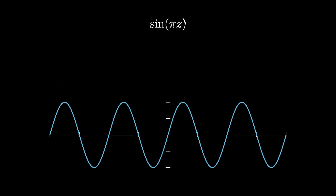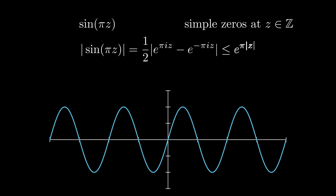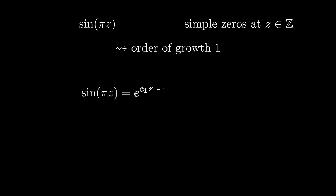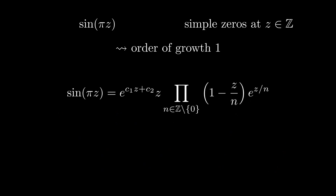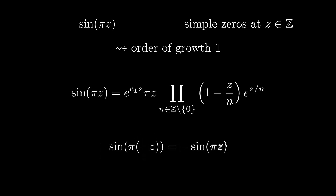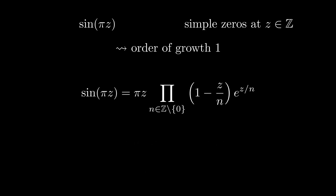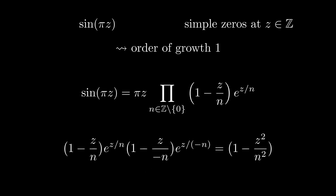Let's take a look at our sine function again. To simplify where the zeros are, we are going to analyze this form of the sine, which has simple zeros at all integers. The order of growth of the sine is 1, as you can see with this inequality. So the Hadamard factorization theorem tells us that sine must be of this form. Let's expand the elementary factors. How do we obtain the two unknown constants? With this limit, we get the value of the second constant. For the other constant, we use that sine is an odd function. The infinite product is even, since for every term of a positive integer there is also a term corresponding to the negative. So we get this, and finally the constant must be zero. Thus we get this product formula for the sine. To get the form Euler used, we multiply each term of a positive integer with the term of the negative integer.